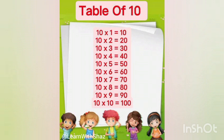10 ones are 10. 10 twos are 20. 10 threes are thirty. 10 fours are forty. 10 fives are fifty. 10 sixes are sixty. 10 sevens are seventy. 10 eights are eighty. 10 nines are ninety. Ten tens are hundred.